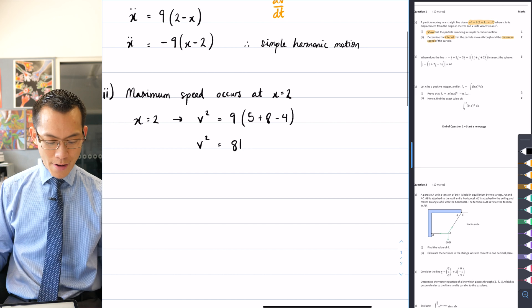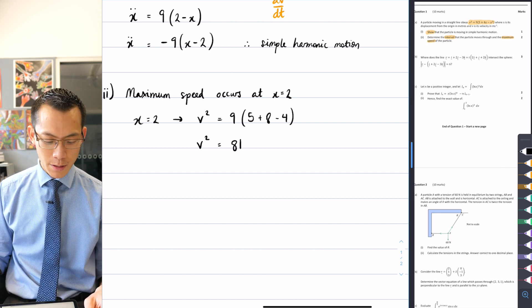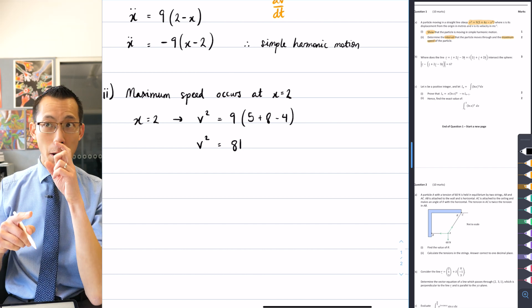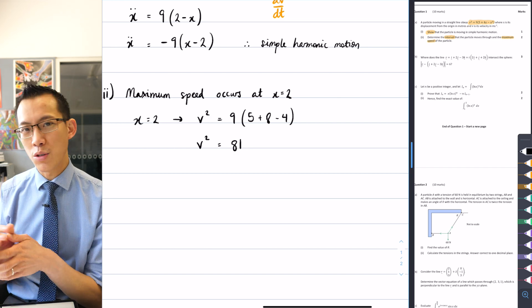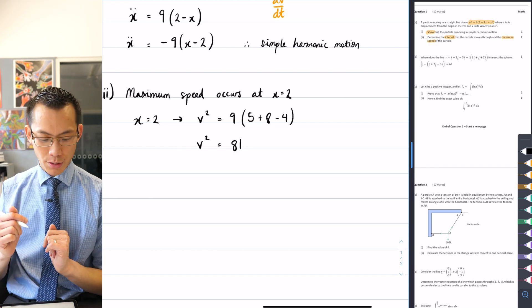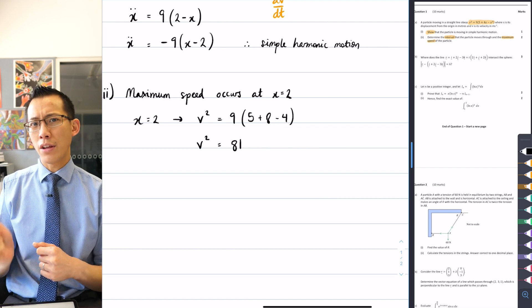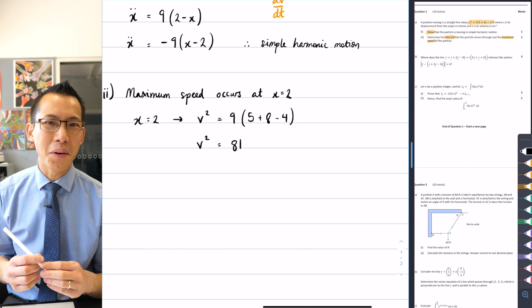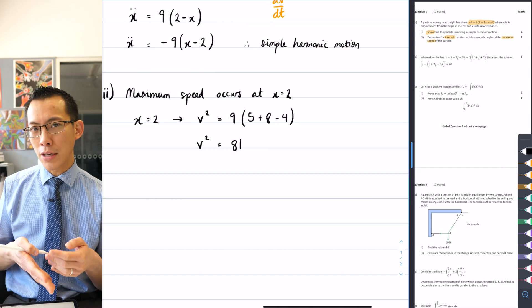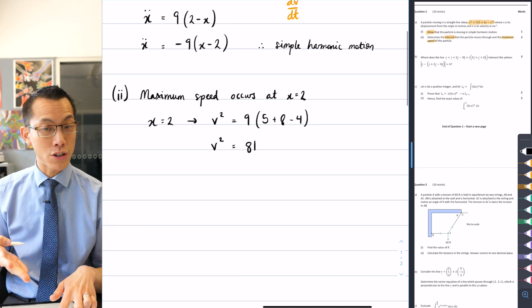From this, the reason why I've got a v squared, of course, is that velocity has direction built into it. So it can be either positive or negative. So strictly speaking, at x equals 2, which is the center of motion, am I going in the positive direction or the negative direction? And the answer is, I could be going in either.